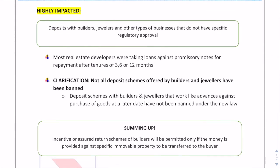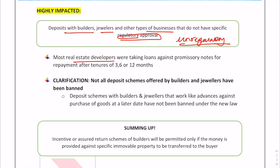Those most highly impacted are deposit takers with builders, dwellers, and businesses that do not have regulatory approvals. Many real estate developers take loans against promissory notes for repayment after tenures of 3, 6, or 12 months through word of mouth. These kinds of real estate developers are highly impacted, as proceedings could now be initiated against them.